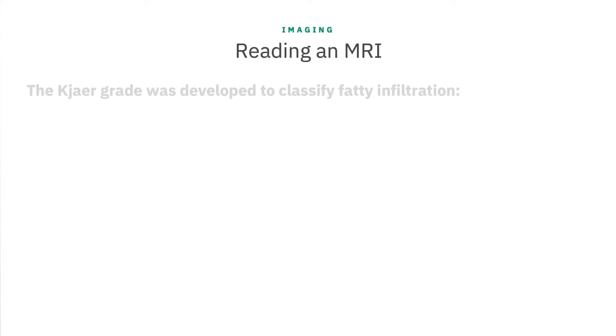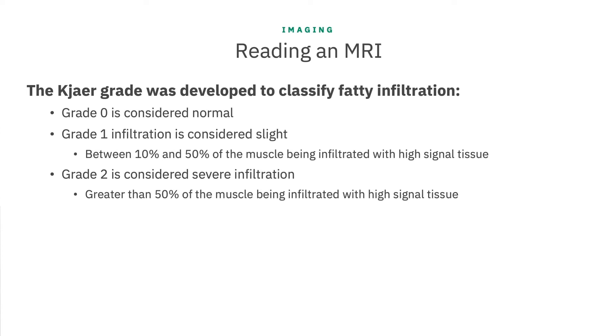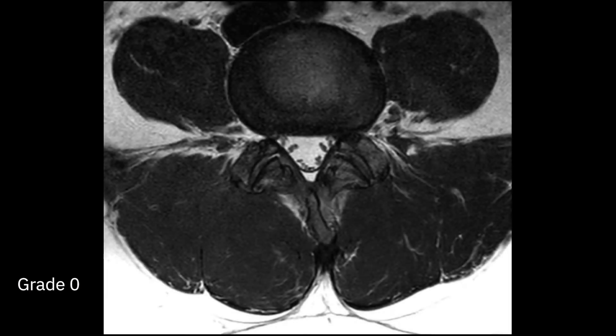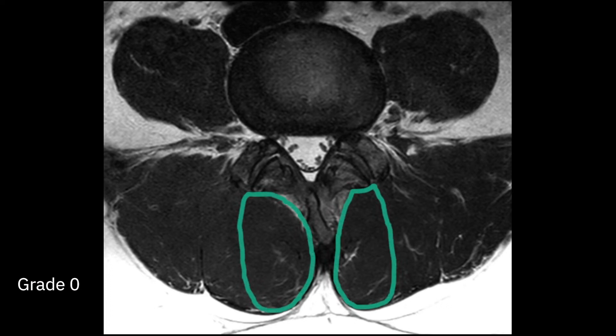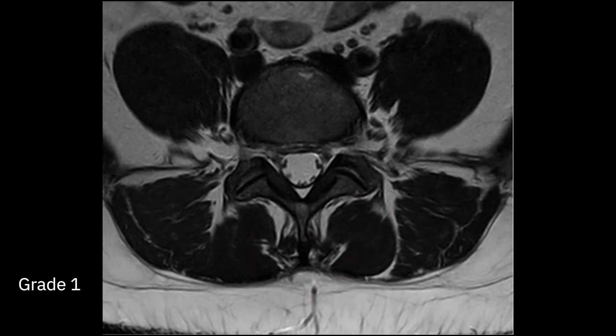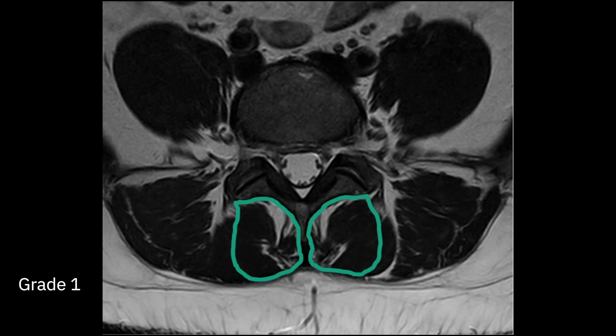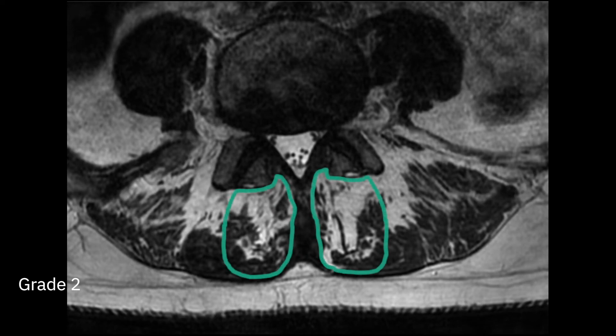Kager showed in a population of 412 adults from the general population that fatty infiltration was strongly associated with low back pain, with an odds ratio of 9.2. They also developed a simple, reliable way to classify fatty infiltration, conveniently named the CAGER grade. Grade 0, such as in this image, is normal — there is next to no high signal in the area defined as the multifidus. Grade 1 infiltration is considered slight, with between 10 and 50% of the area inside the boundary of the muscle being high signal. Grade 2 is severe infiltration with greater than 50% of the muscle infiltrated with high signal tissue. There are other grading systems for assessing fatty infiltration into muscles, but in practice they tend to be quite similar to the CAGER grades.